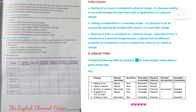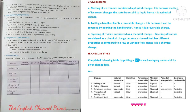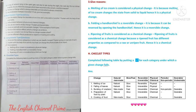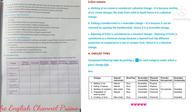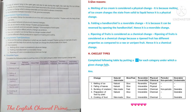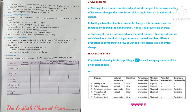Question three — Give reasons. A: Melting of ice cream is considered a physical change — melting of ice cream changes the state from solid to liquid; hence it is a physical change. B: Folding a handkerchief is a reversible change — folding of a handkerchief can be reversed by opening the handkerchief, so it is a reversible change. C: Ripening of fruits is considered a chemical change — because a ripened fruit has different properties compared to a raw or unripened fruit; hence it is a chemical change and cannot be reversed.